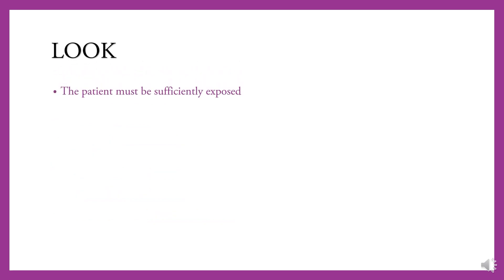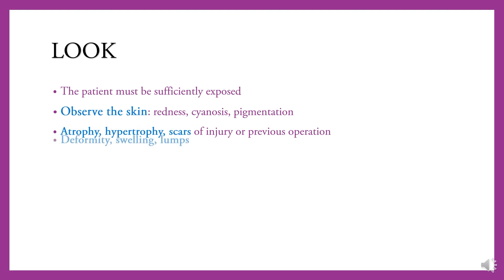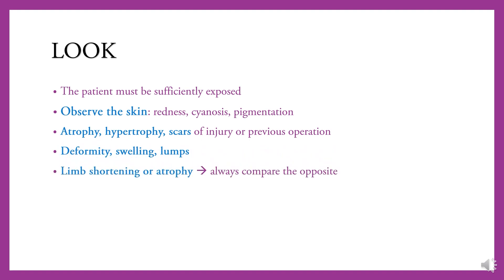For inspection, the patient must be sufficiently exposed. Observe the skin for redness, cyanosis, and pigmentation. Observe whether there is atrophy, hypertrophy, or scars. Look for deformity, swelling, illness, limb shortening, or atrophy. We should always compare the opposite side, and we would also like to observe their gait.